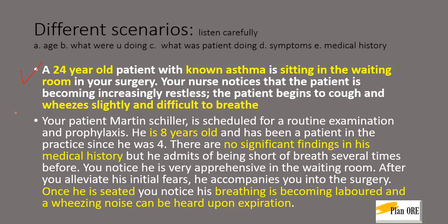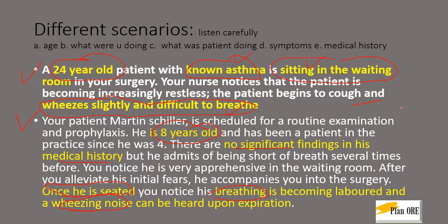There are two different scenarios in which the same asthmatic attack can be asked. The items marked in yellow are what you should look out for when the examiner reads the question. For example: a 24-year-old adult with a medical history of asthma sitting in the waiting room with the same symptoms. Or an eight-year-old child — no medical history, seated on your dental chair, nothing being done at that point — showing the same features. In both cases your answer is an acute asthmatic attack, but further questions will differ depending on the age and what you are doing at the time.